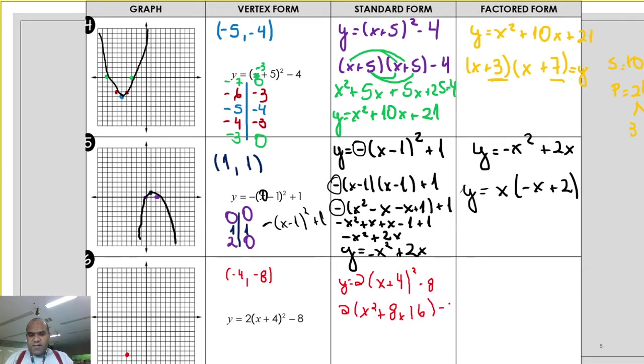And don't forget here, negative 8. Right now, I need to multiply by 2, everything. 2x square, plus 16x, plus 16x, plus 32 minus 8. And after, you subtract 8, 32 minus 8.